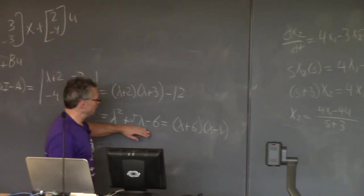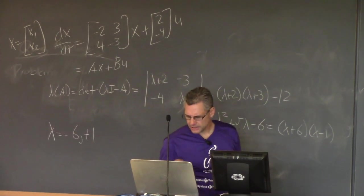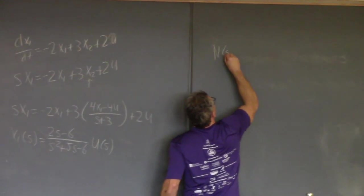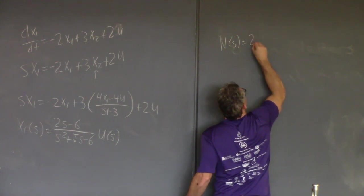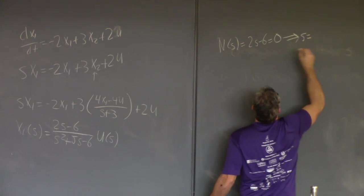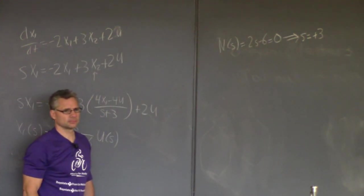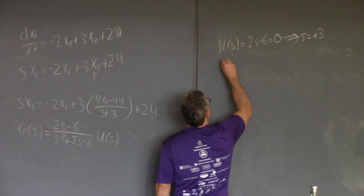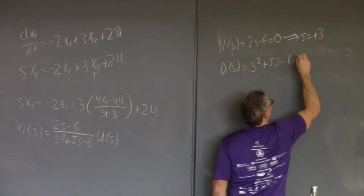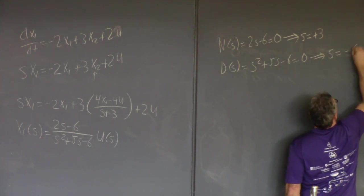This will always be the case because the eigenvalues of the A matrix are the same as the poles of the transfer function. To find the zeros, you set the numerator polynomial 2s minus 6 equal to zero, giving s equal plus 3. That is one of those right half-plane zeros.